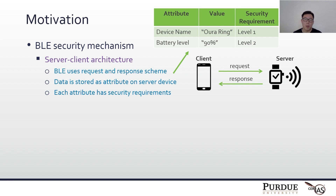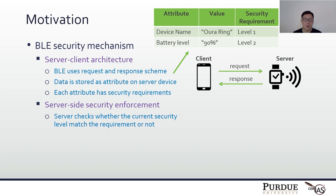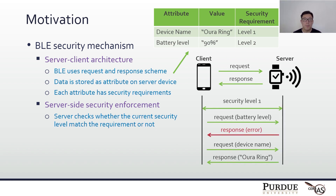For example, these two attributes can be stored on a fitness tracker. The security requirement for device name is level 1, and the requirement for battery level is level 2. When the server receives a request from the client, it checks whether the current security level meets the requirement of the attribute. If the current security level is 1 and the client sends a request for battery level, the server checks the requirement — which is 2 — finds the current security level is 1, which does not meet the requirement, and rejects the request with an error message. While if the client sends a request for device name, the server will grant the access and respond with the value of the device name attribute.